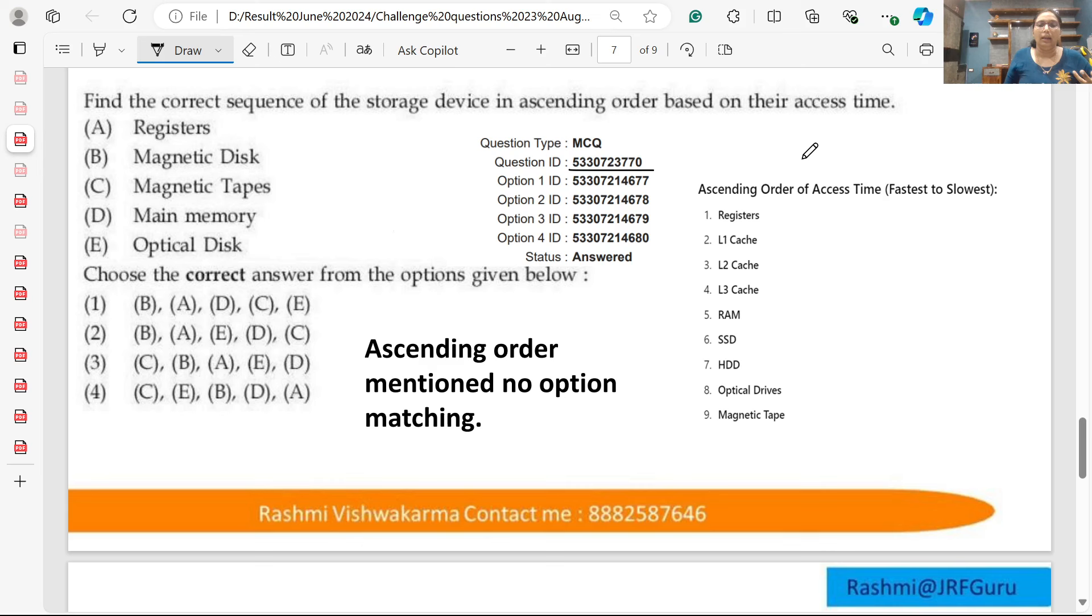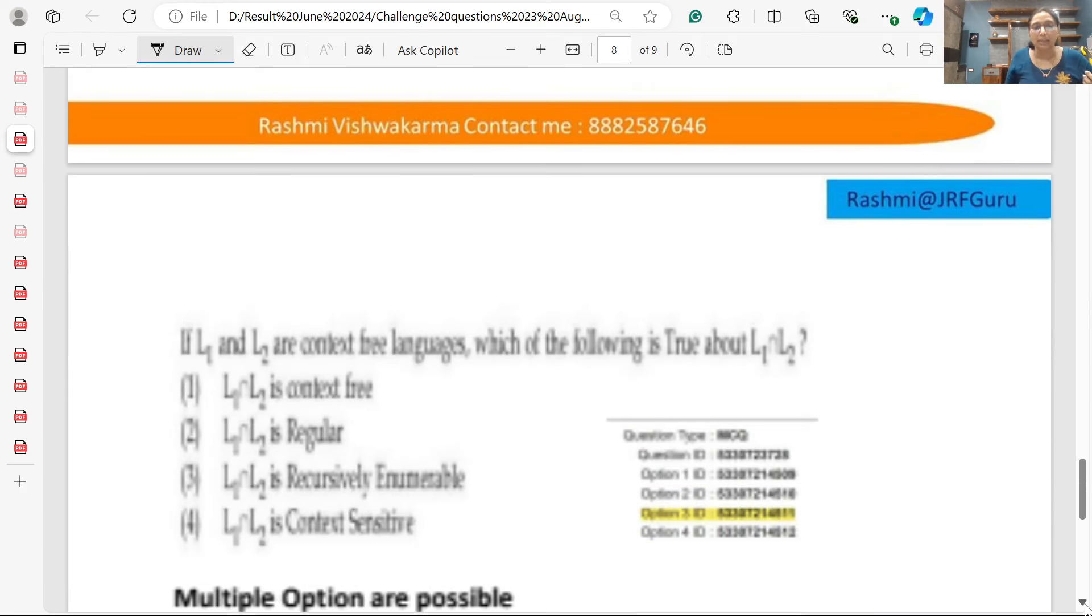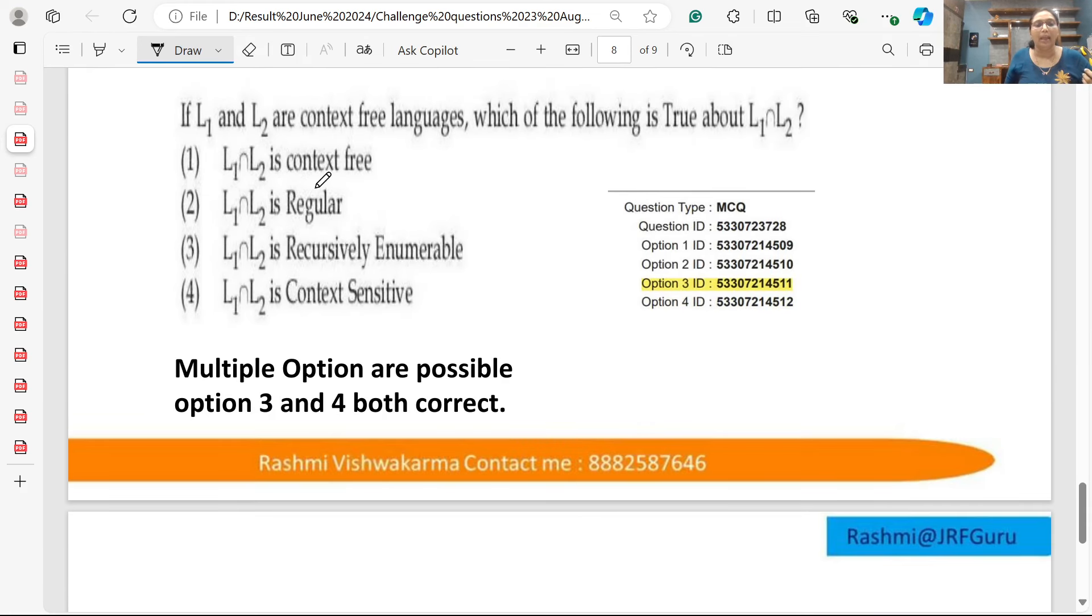Question number 770. Here they are asking about the ascending order, but according to the options, there's an issue with the ascending order specification. So yes, we can challenge this one as well. And the last question I have is 728.